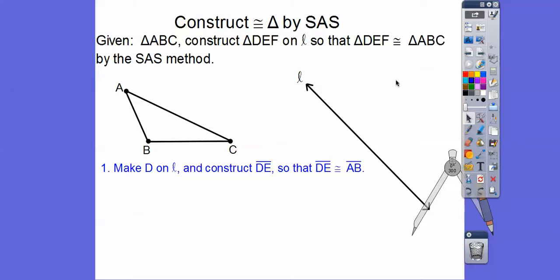So what we're going to first do is make point D on this line right here. So we'll put a point D right there. And then we'll construct a segment DE, so it's the exact same length as AB. So we're going to pick up our compass right here and then find the length from A to B. So the pointy end goes right here.